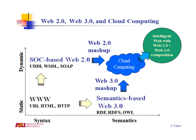Here's a nice slide from Dr. Chen's lectures in Service-Oriented Computing and Information Management. It shows the relationship of Web 1.0, Service-Oriented Computing, the Semantic Web, and Cloud Computing. He views the migration of Service-Oriented Computing and Semantics-based Web away from Web 1.0 as two orthogonal developments.